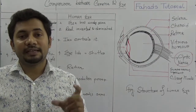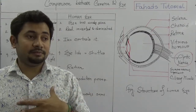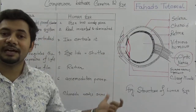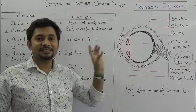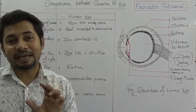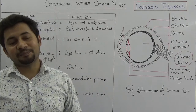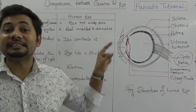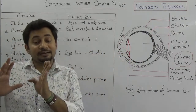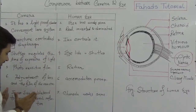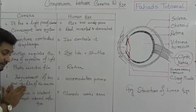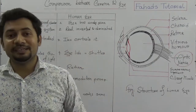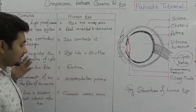Lastly, number seven: the inner side of the camera is blackened to prevent internal reflection of light. Similarly, inside human eyes the choroid — a deep black inner membrane — contains melanin, which prevents internal reflection inside our eyes. So the blackened interior of the camera and the choroid in human eyes are performing the same function.